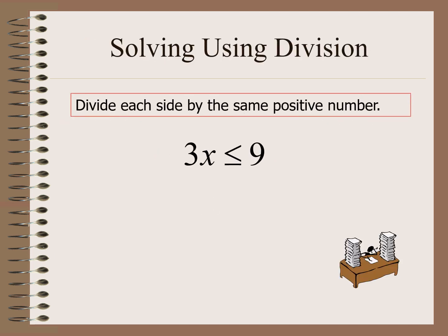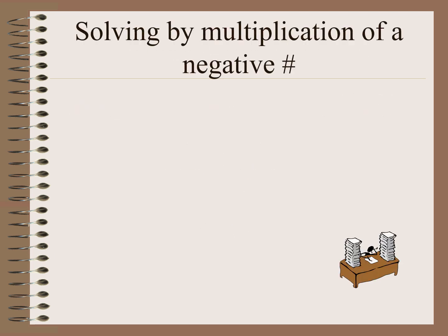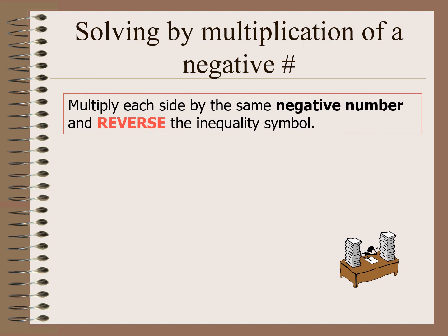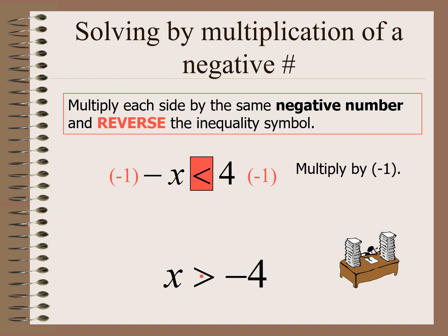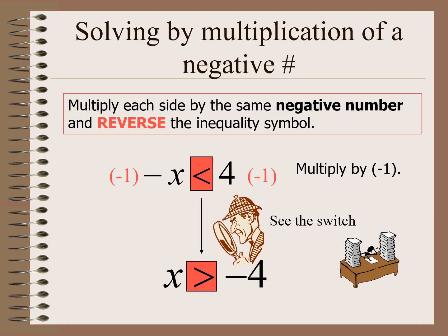Using division: if we have 3x less than or equal to 9, dividing both sides by 3 gives x is less than or equal to 3. Nothing's changed because we divided by a positive number. Now solving using multiplication by a negative number: if we have negative x less than 4, we multiply both sides by negative 1, giving x is greater than negative 4. The inequality symbol reverses — see the switch from less than to greater than.